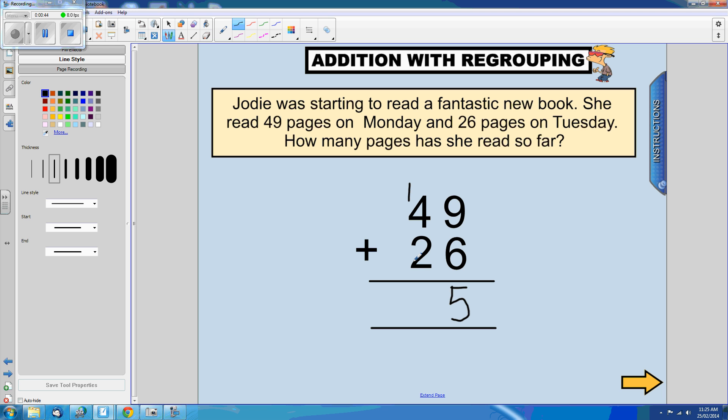Now we're adding our 10s column. 1 plus 4 plus 2 is 7. So our answer is that Jodie has read 75 pages so far.